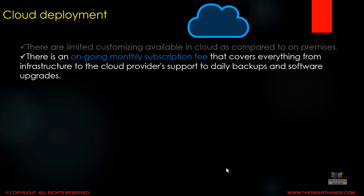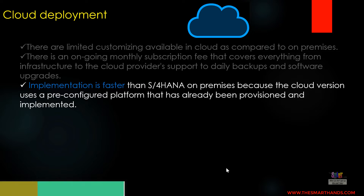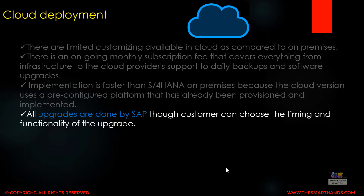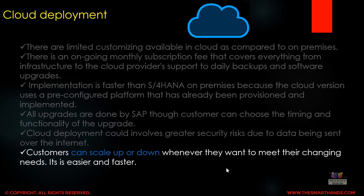There is an ongoing monthly subscription fee that covers everything from infrastructure to cloud provider support, daily backups, and software upgrades. Implementation is faster than S/4HANA on-premise because the cloud version uses a pre-configured platform that has already been provisioned and implemented. All upgrades are done by SAP — the customer can choose the timing and functionality of the upgrade. Cloud deployment could involve greater security risk due to data being sent over the internet. Customers can scale up or down whenever they want to meet their changing needs.